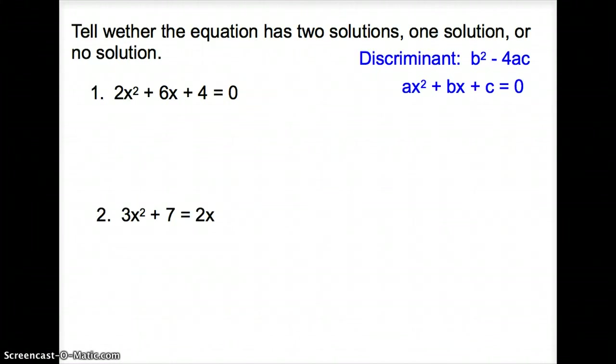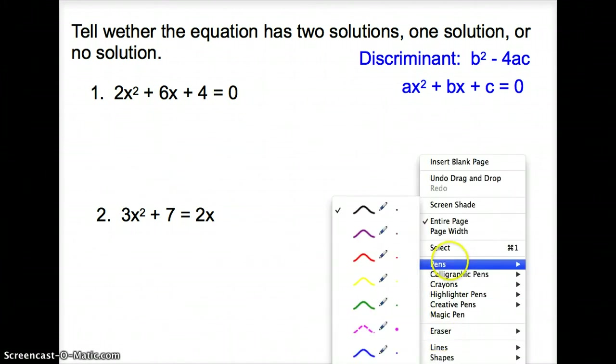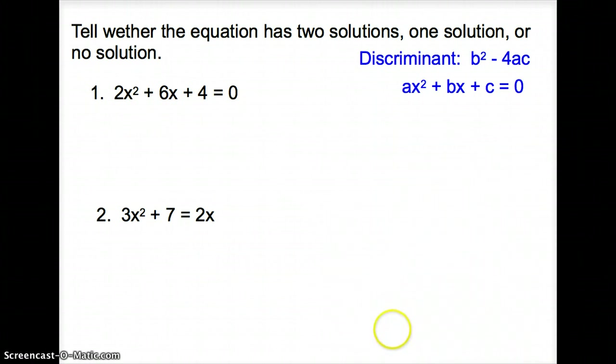Now let's try it out. Let's see how many solutions these equations have. We're going to start with number one: 2x² plus 6x plus 4. Remember, our discriminant is just b² minus 4ac. So I have an a, a b, and a c. I'm just going to plug them in to b² minus 4ac.